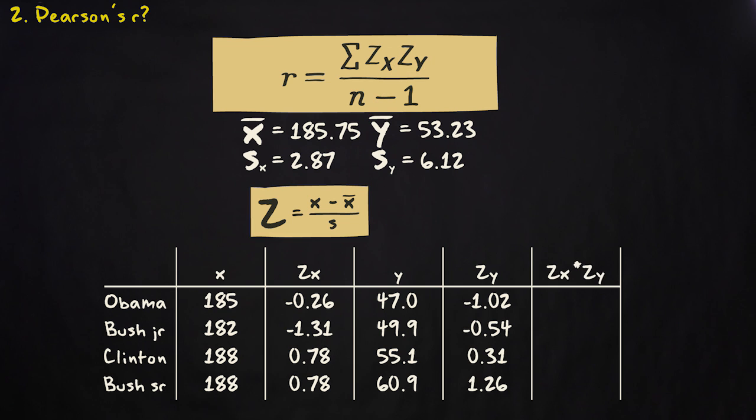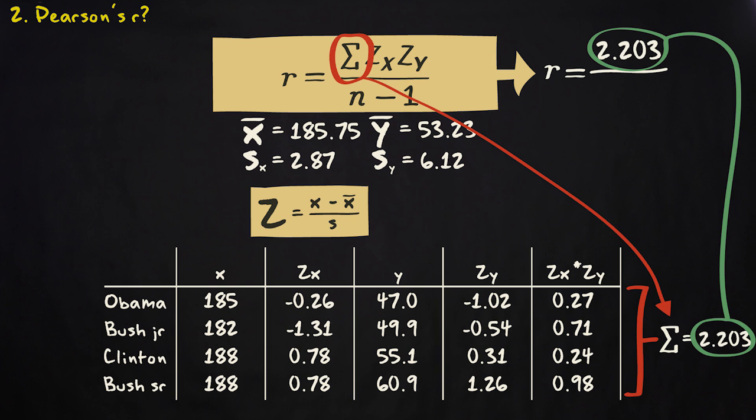The next step is to multiply the z-scores of every case with each other. For the first case, this results in minus 0.26132 multiplied with minus 1.01964. That makes 0.266456. And so on. We have now finished this part of the formula. Next, we have to add up all these values. That makes 2.202649.